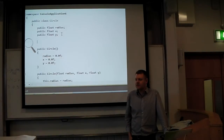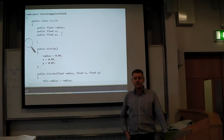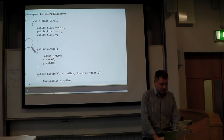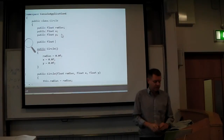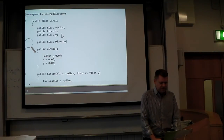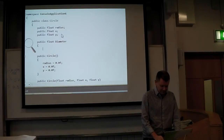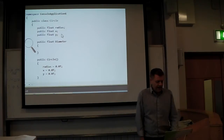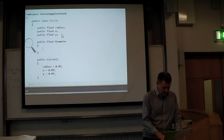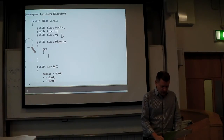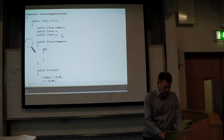I want to make a few things that from outside the class look like fields but are actually calculated. Let's make the diameter first. The syntax in C-sharp: I want it to be public, a float, and a property. The convention is to start a property with an uppercase character — so Diameter. Public float Diameter, open curly brackets, then you write the get implementation: return radius * 2.0f. That's how you set up a property.